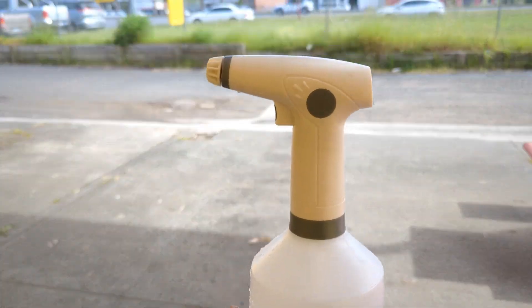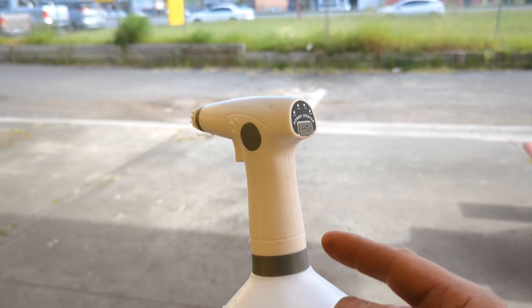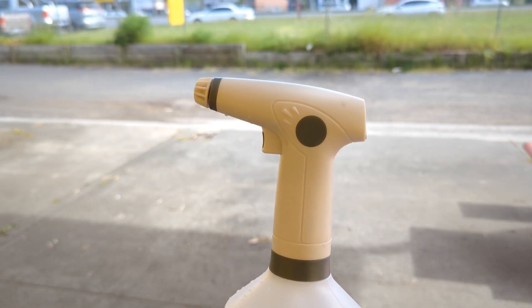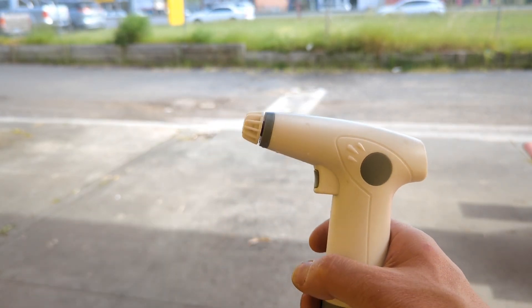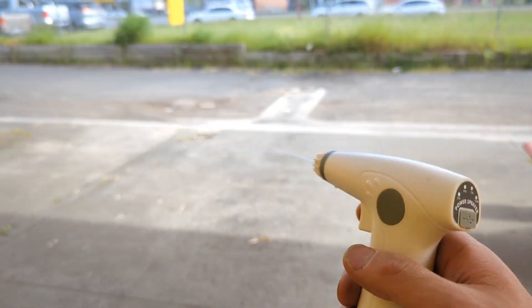Now I know what you're thinking. You're thinking is this going to be powerful enough to spray my mates with or my kids or pets or whatever and yes it is. Let's have a look. Basically unscrew this knob to put it in jet mode and then what I do is click this button here. As you can see it's coming out as a bit of a fine jet.